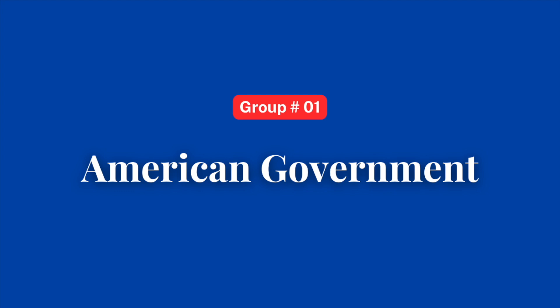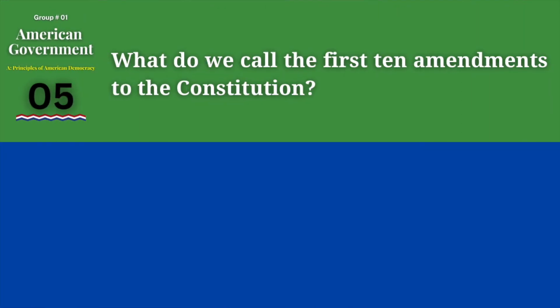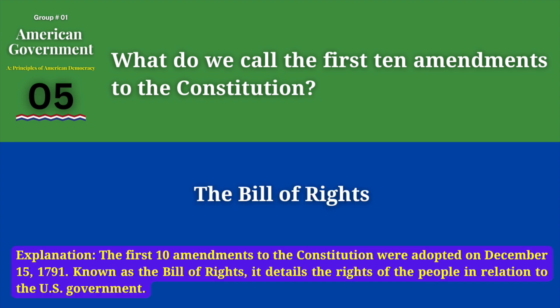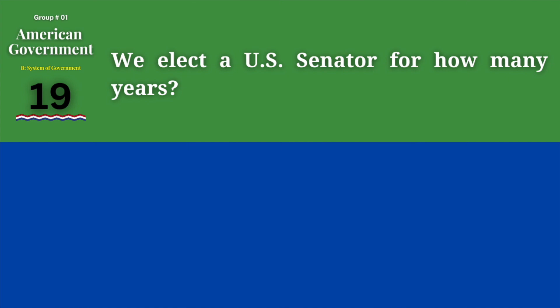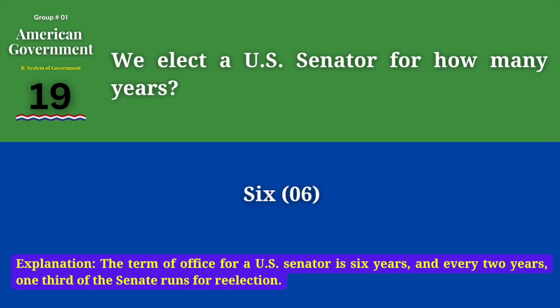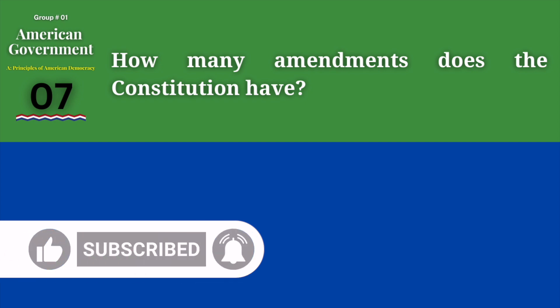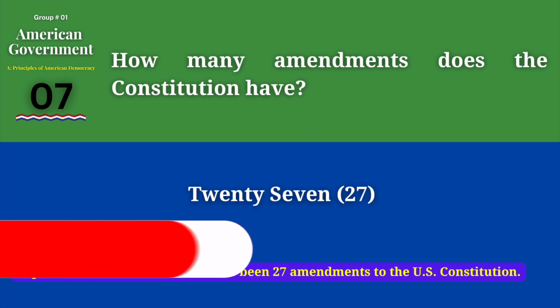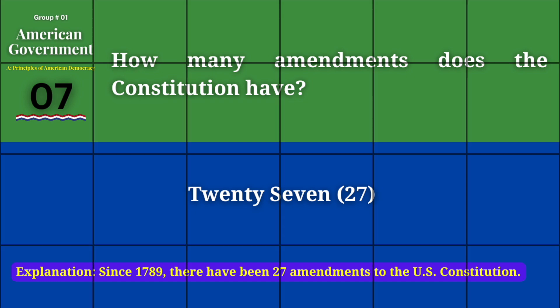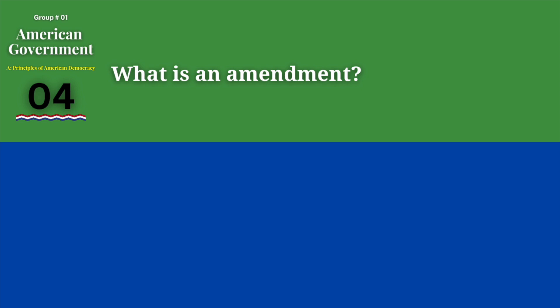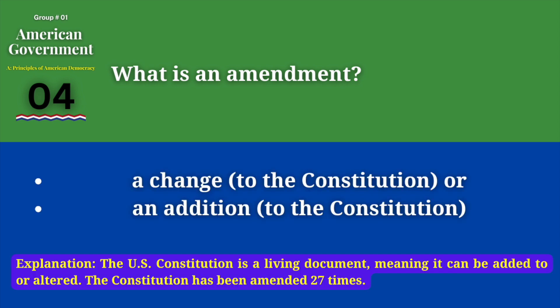Group 1: American Government. What do we call the first 10 amendments to the Constitution? The Bill of Rights. We elect a U.S. Senator for how many years? 6. How many amendments does the Constitution have? 27. What is an amendment? A change to the Constitution.